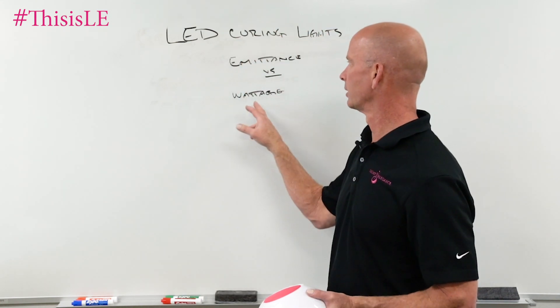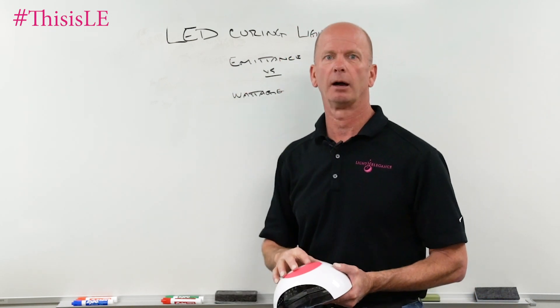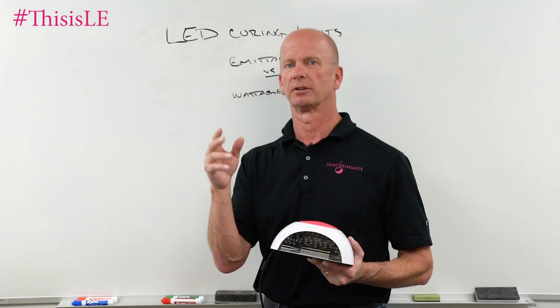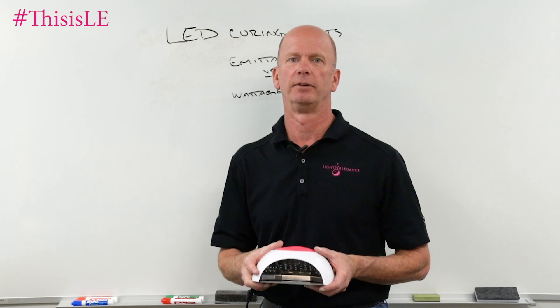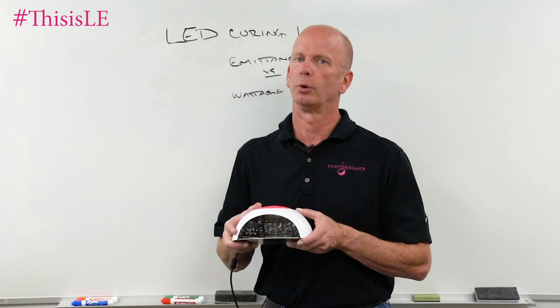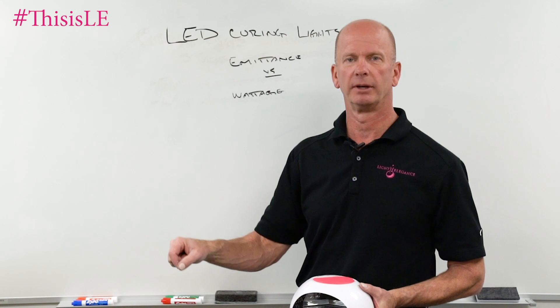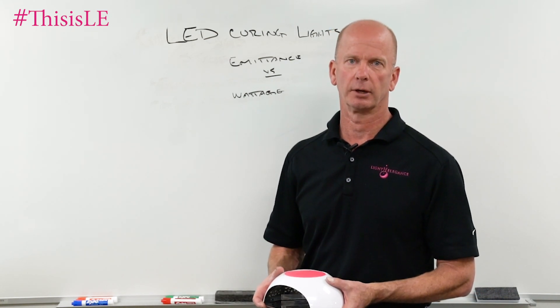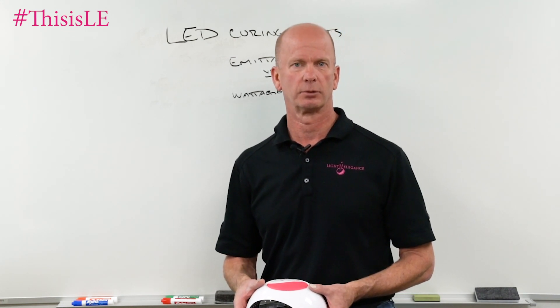Hopefully that made some sense. If we're talking about wattage, we're talking about energy consumption. If we're talking about emittance, we're talking about how much light is being generated — two completely separate issues. If your light is rated as 48, 36, or 32 watts, that gives you an approximate value of how much energy it will use, but it won't give you all the information. Make sure you choose the right light based on the manufacturer's recommendations. Thank you. This has been Jim McConnell, Chemist Corner, coming to you from Redmond, Oregon — Light Elegance Headquarters. Bye-bye.